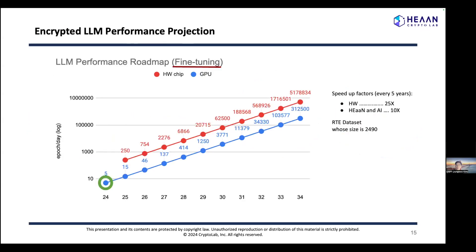Currently, with the RTE dataset of about 2,500 samples, we can run 5 epochs per day. In the coming years, we expect fine-tuning to be possible within minutes. Of course, larger models or datasets will proportionally take more time — for example, if the dataset size is around 10,000, it would take approximately four times longer. On the other hand, we used only 8 GPUs here, and using more GPUs would reduce fine-tuning time proportionally.